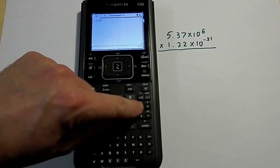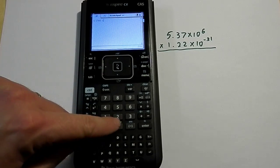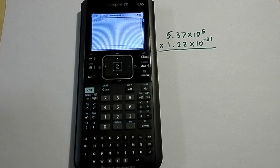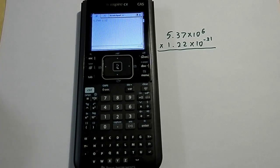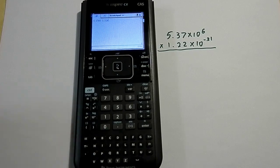Now I do have to hit the multiplication button because I am multiplying two numbers. I'm going to go 1.22 because I'm typing in 1.22 times 10 to the negative 31, but to get the scientific notation again, I press the EE button.